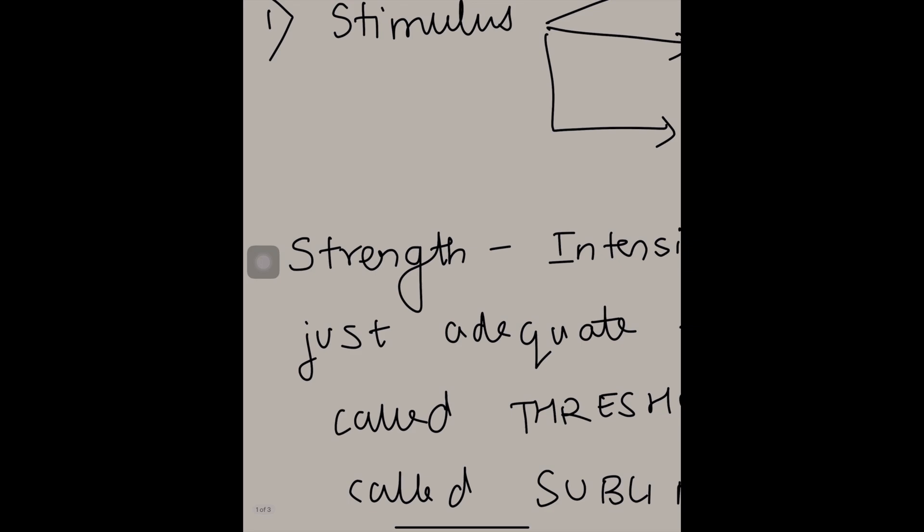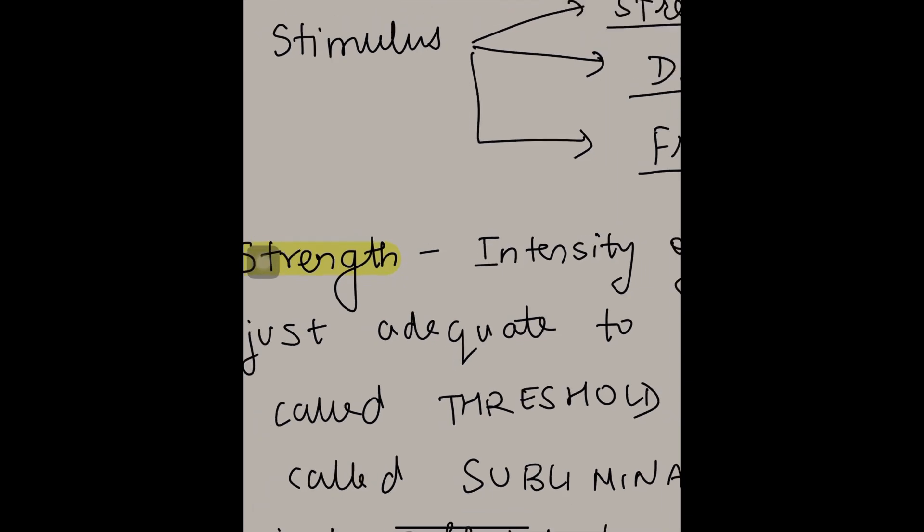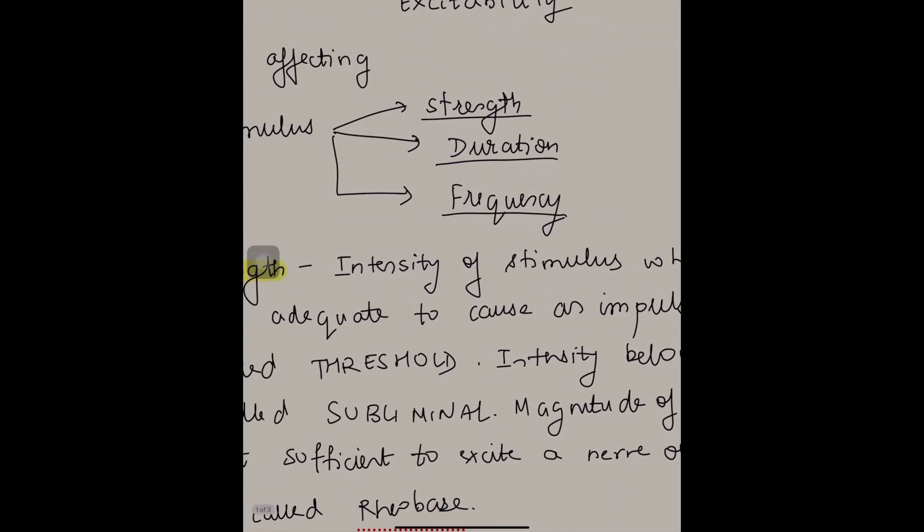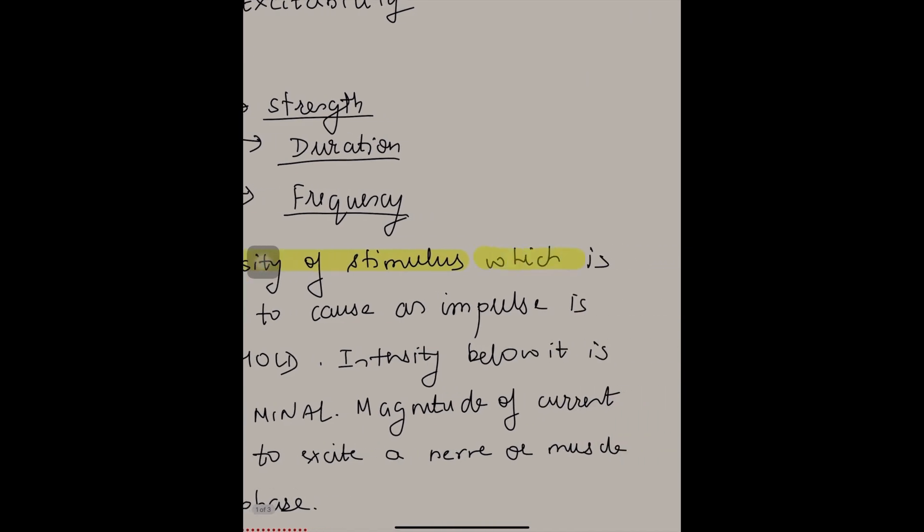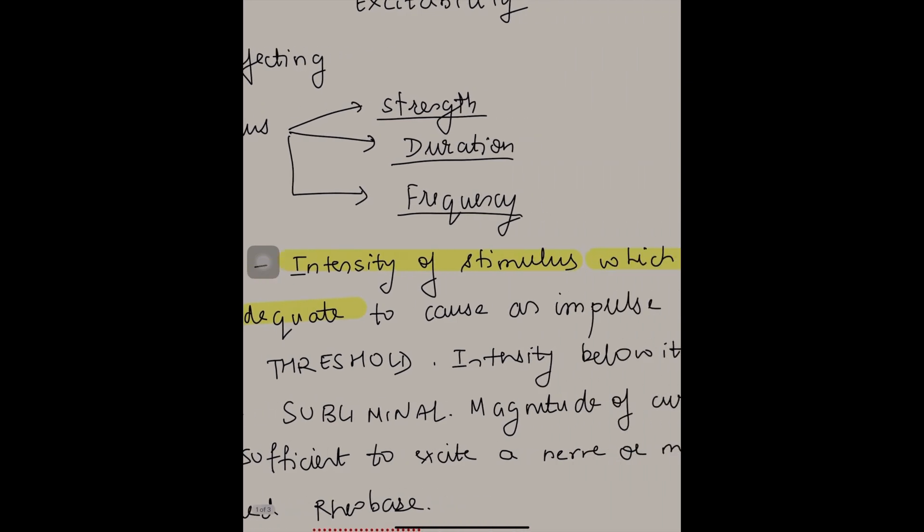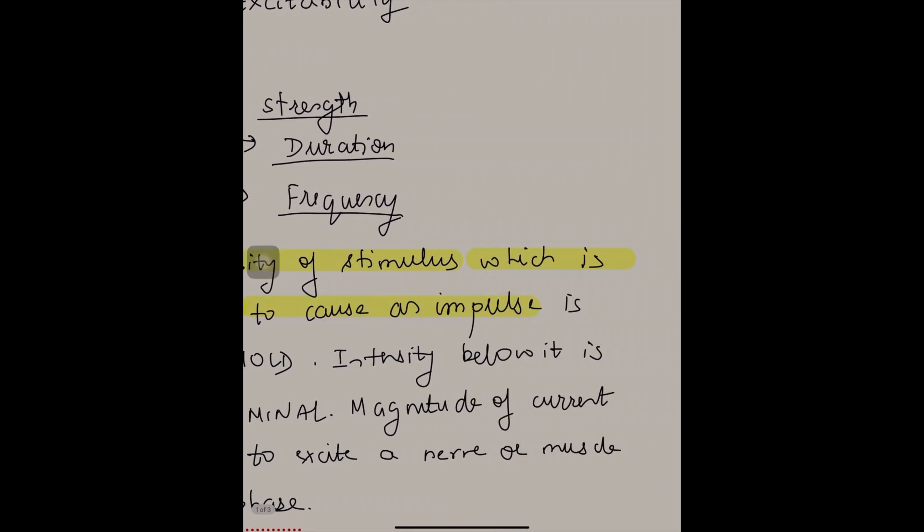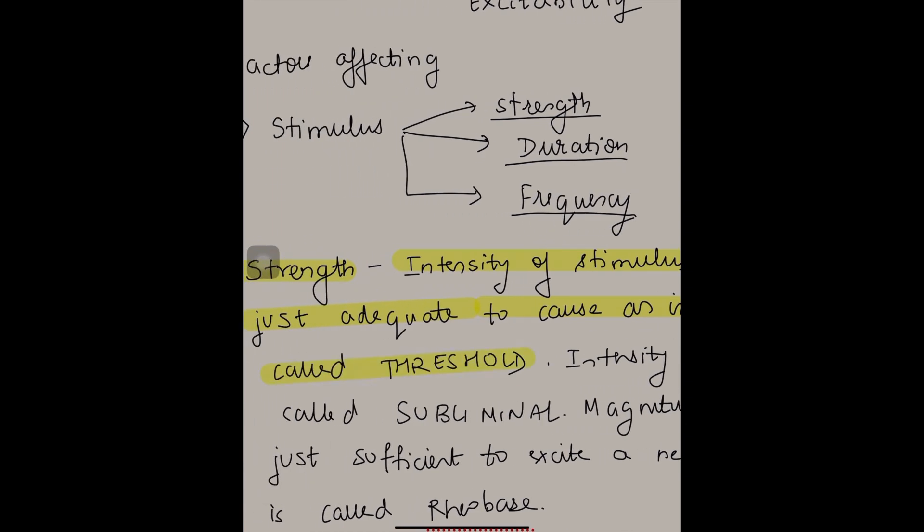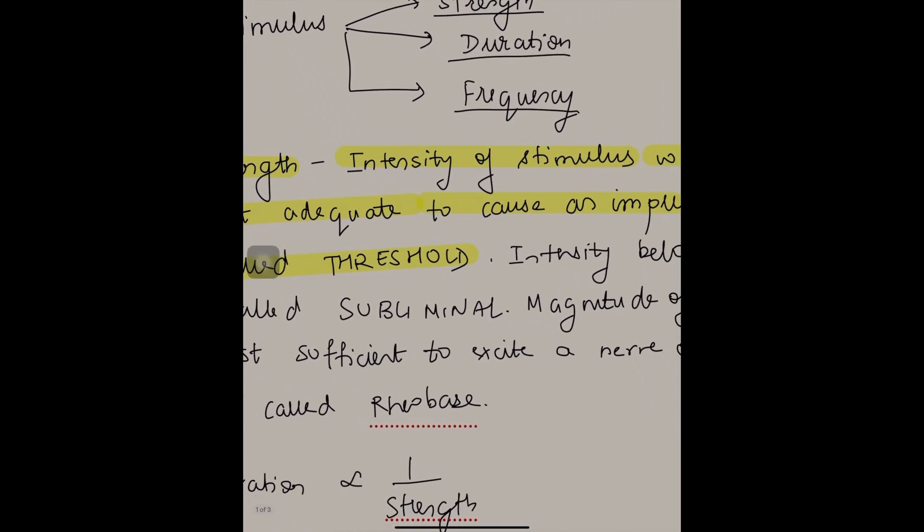We start with strength. The intensity of stimulus which is just adequate to cause an impulse is called threshold. So you first define threshold.